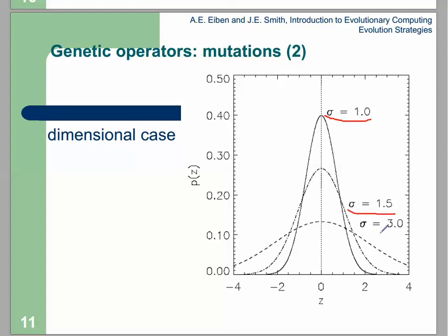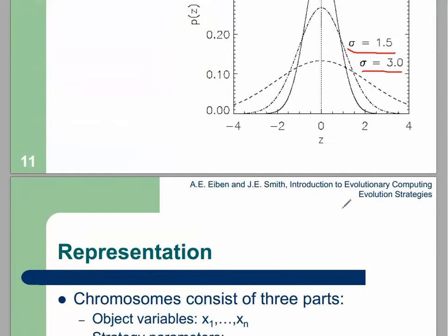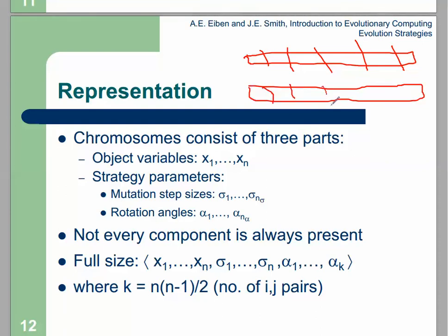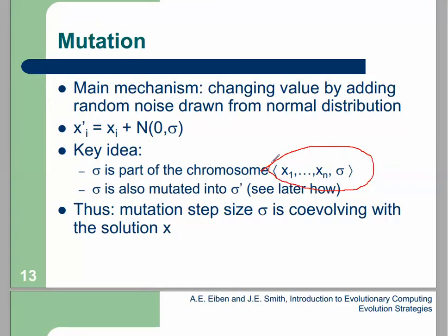You can change each gene by sigma — the larger sigma allows more change. There are three types of mutation in ES. The first type applies one sigma to all genes. For example, if you have x1, x2, x3, you apply only one sigma to all of the genes. This is the first type of mutation in evolutionary strategy.